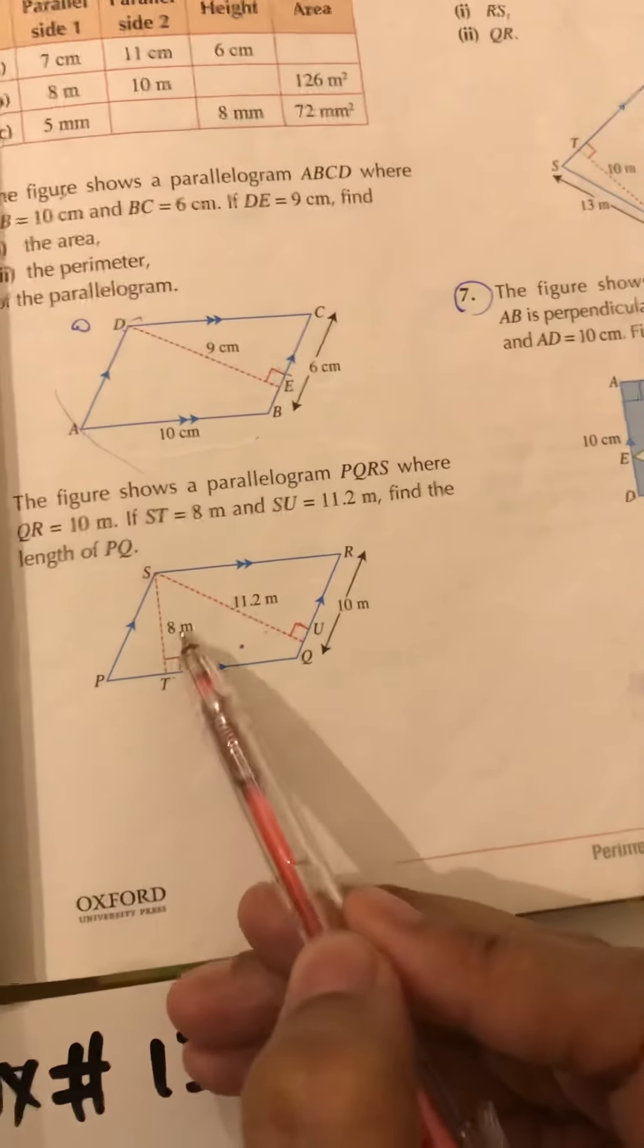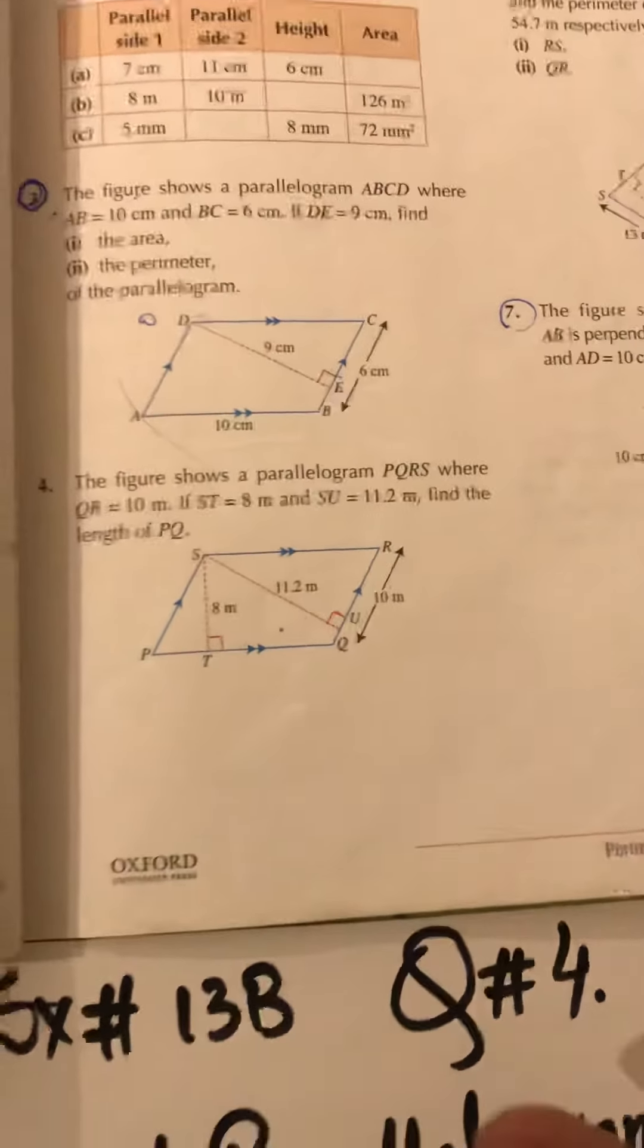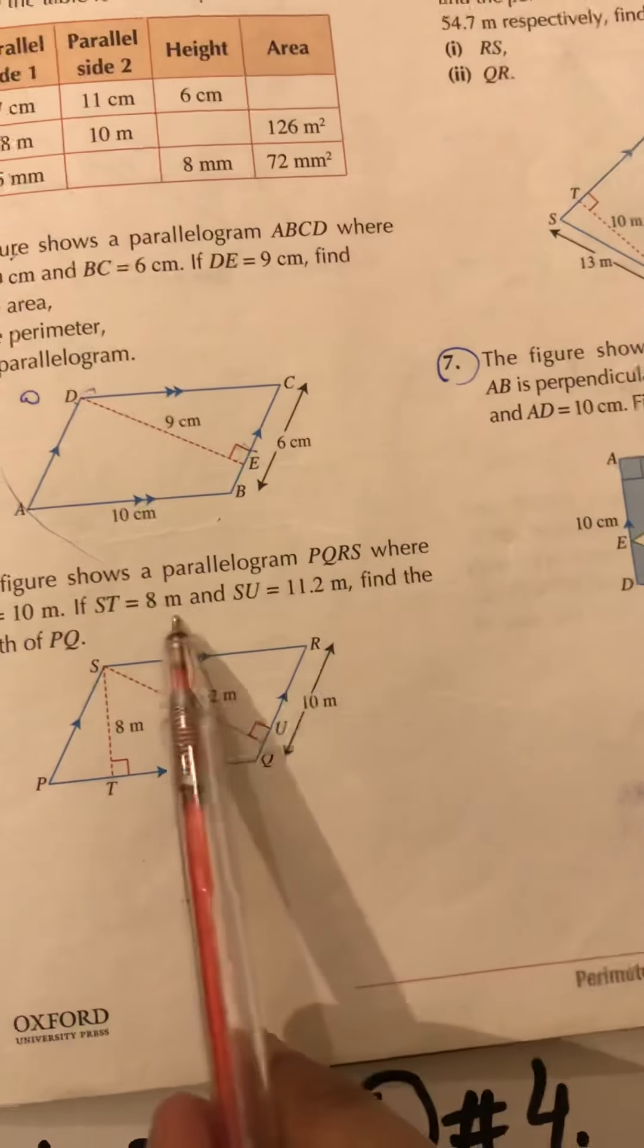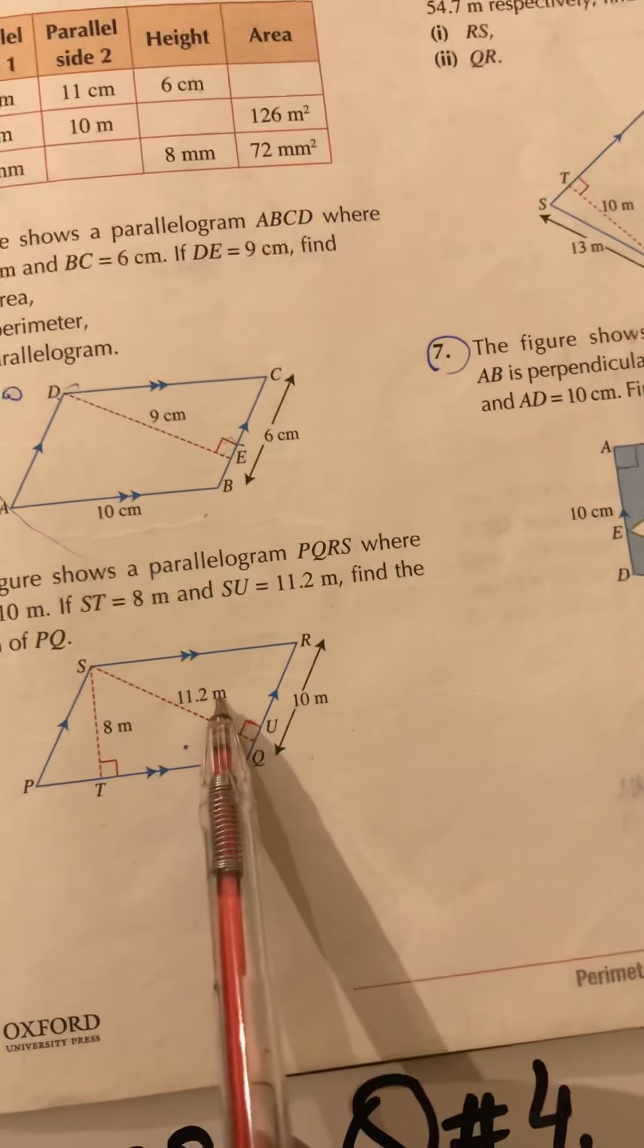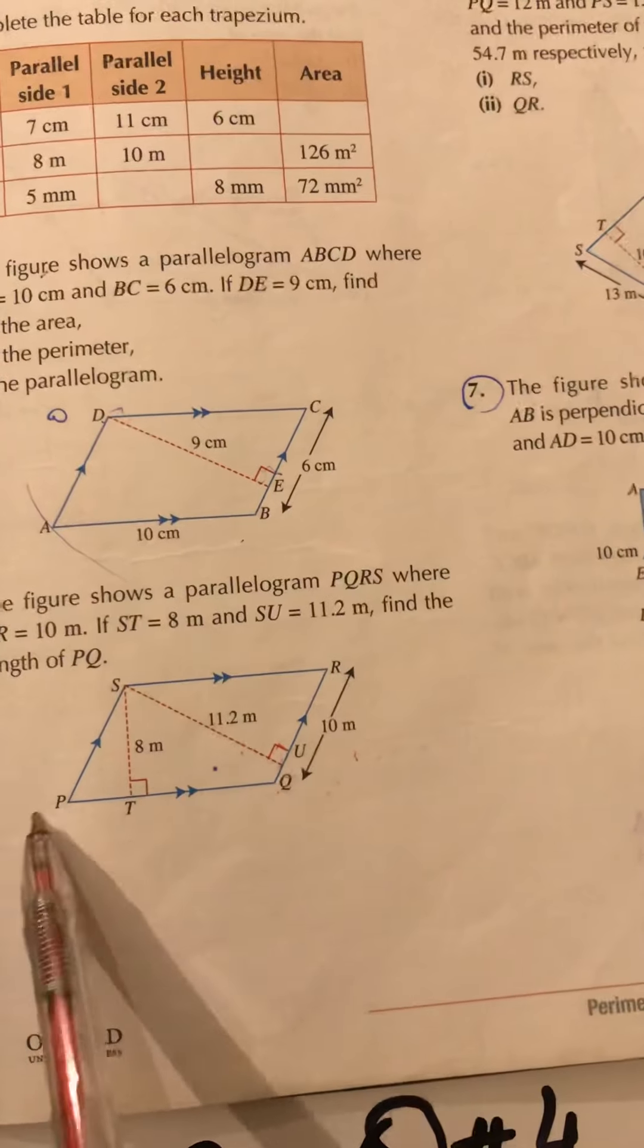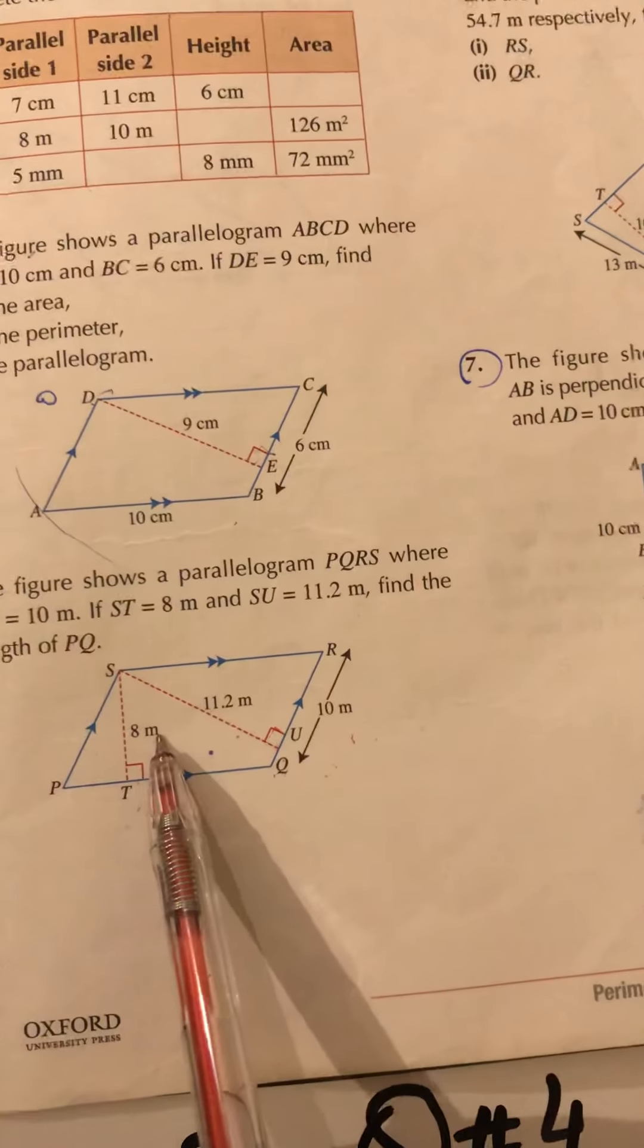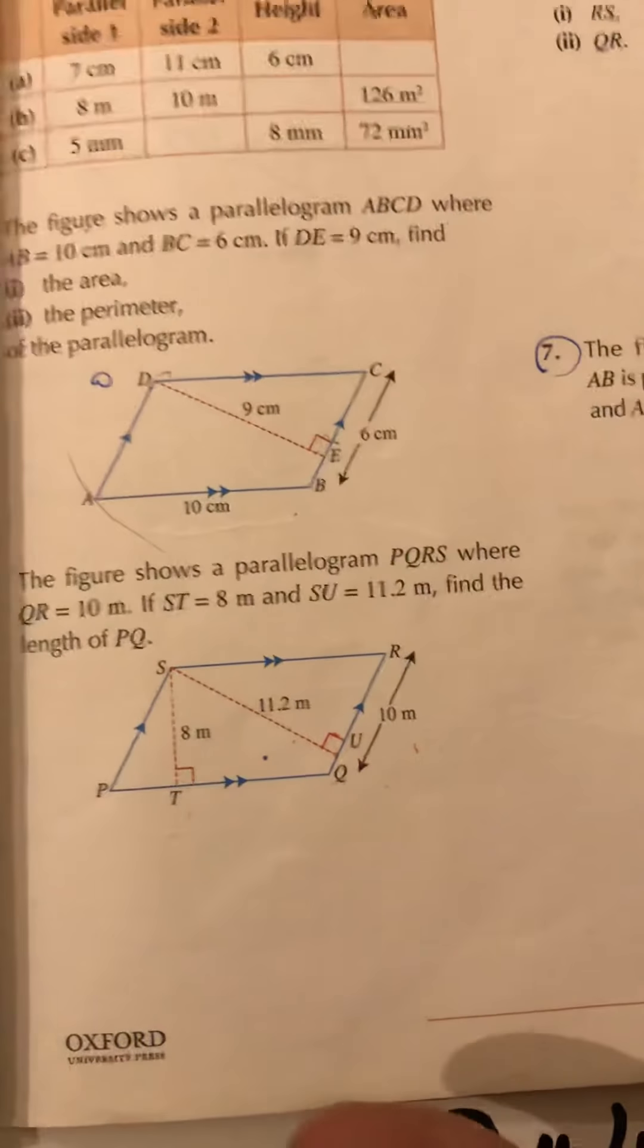We have got two perpendicular heights: one is SU, 11.2 meters, and the other one is ST, 8 meters. So what are we going to do? Our objective will be first, we'll use QR as the base length for 11.2 meter height and the base length is PQ for the perpendicular height ST, 8 meters.